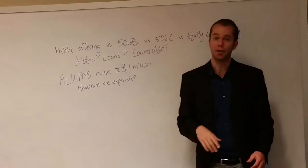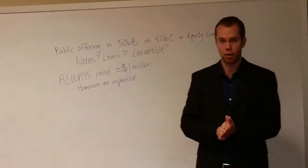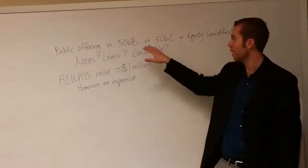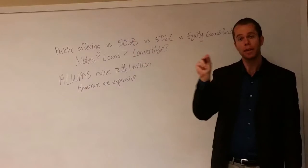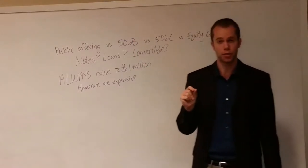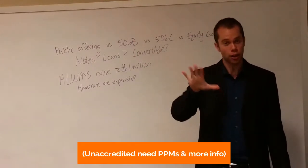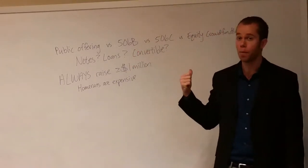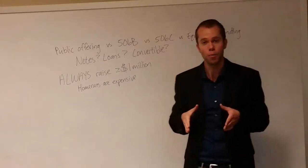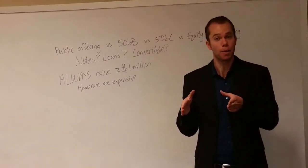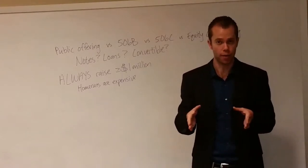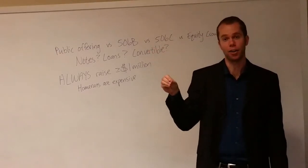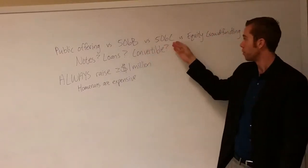With 506B, last video we talked a little bit about whether somebody's an accredited investor or an unaccredited investor. 506B allows you to actually get both. You're limited for the unaccredited investors to 35, and again with everything in this video check with a lawyer — this stuff is changing all the time. But as it stands right now you can take on people that have not proven that they're accredited investors.